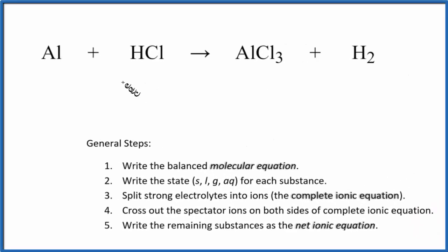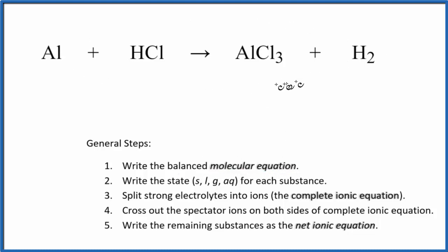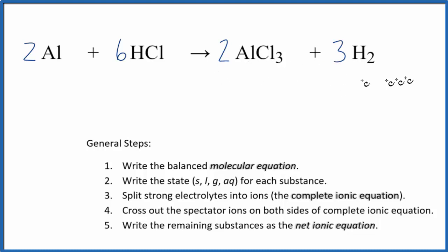In this video we'll write the net ionic equation for Al plus HCl — aluminum plus hydrochloric acid. When we write net ionic equations, the first thing we need to do is balance the molecular equation. I do have a video on that — you can see the link in the description — but the coefficients are 2, 6, 2, 3.